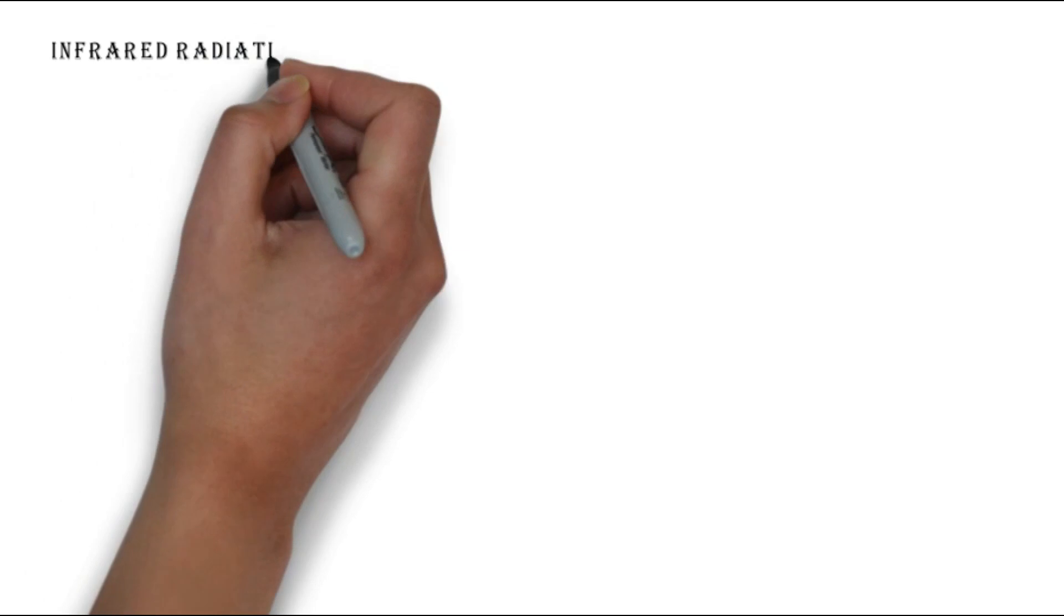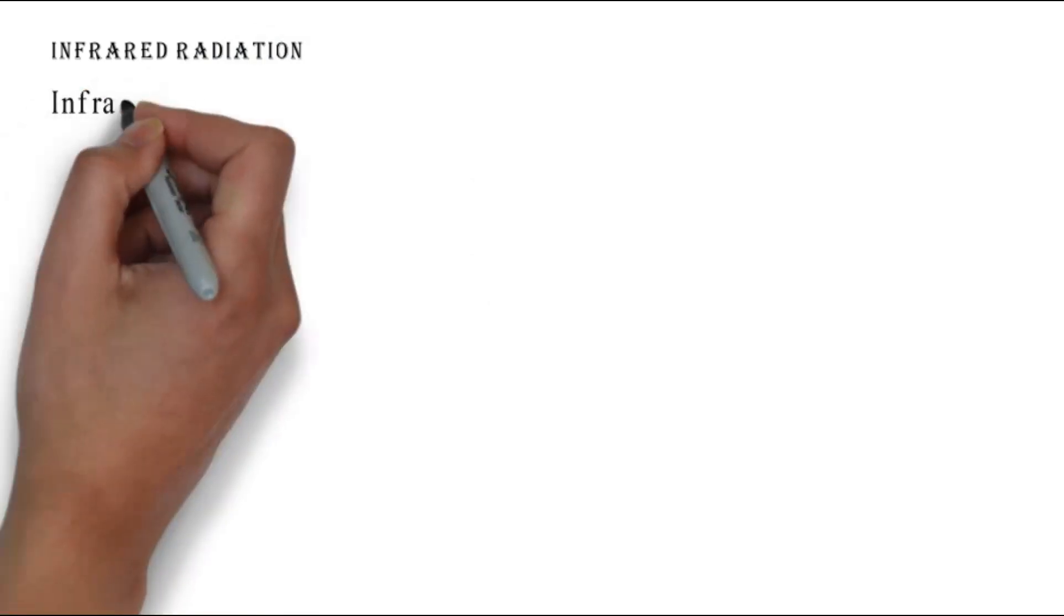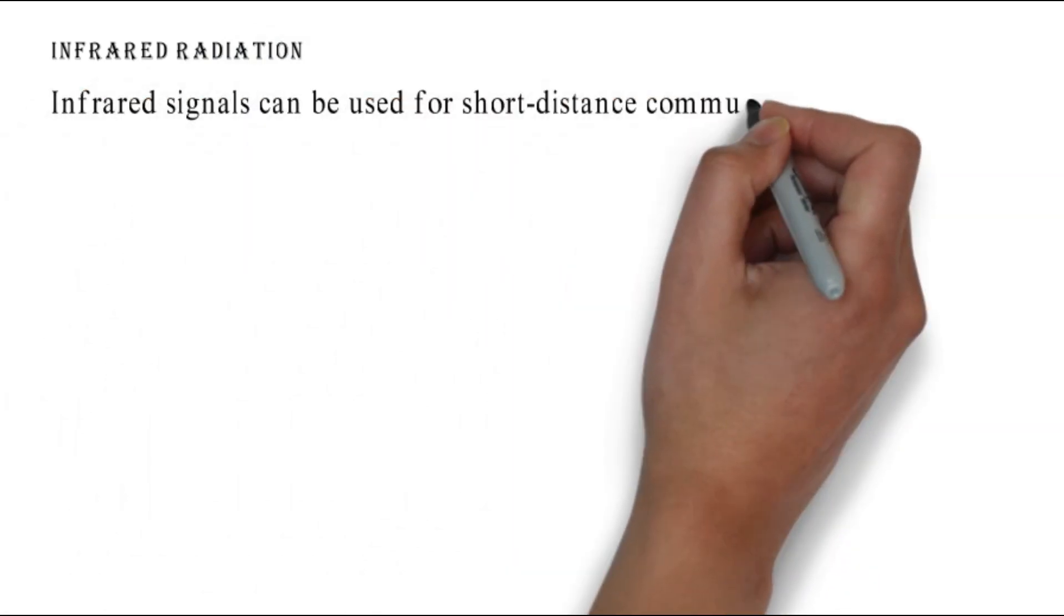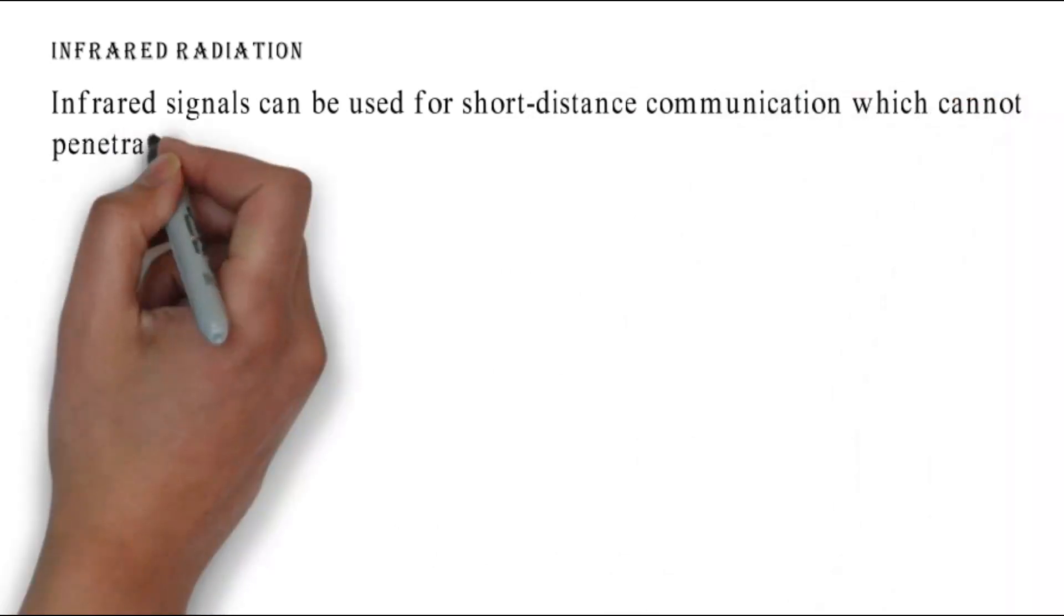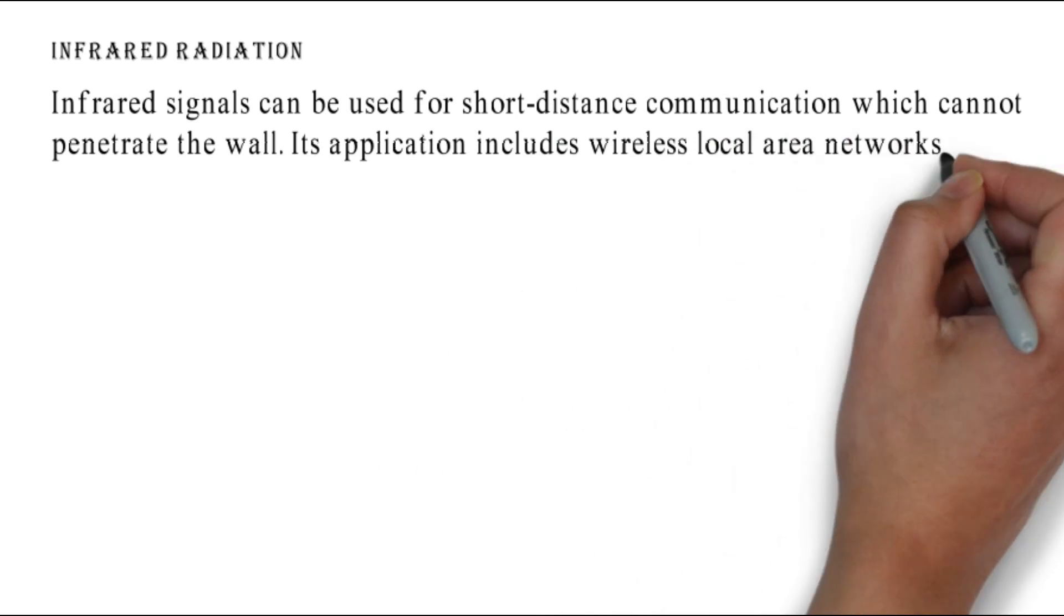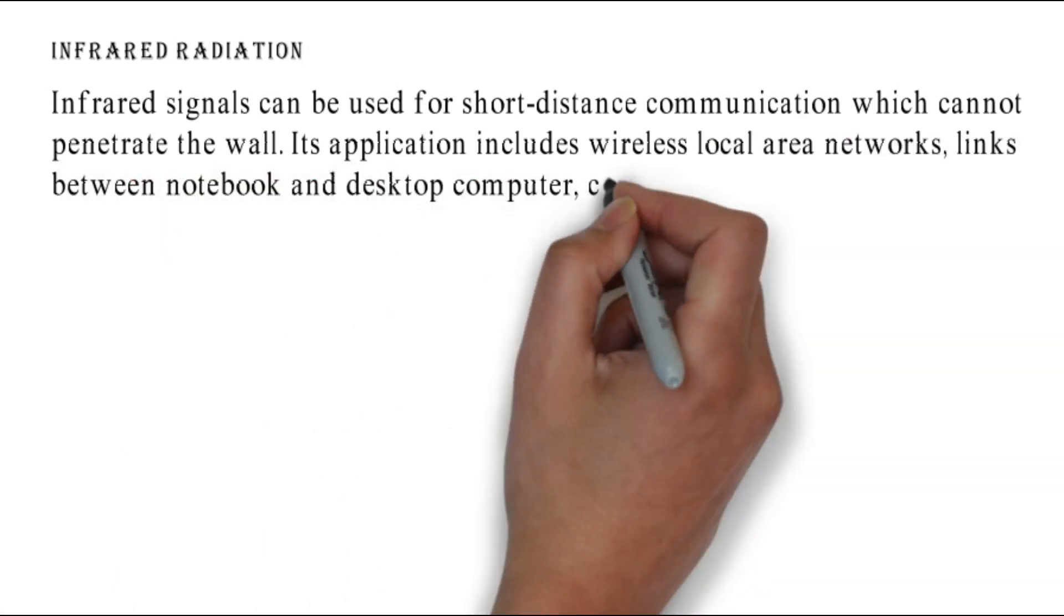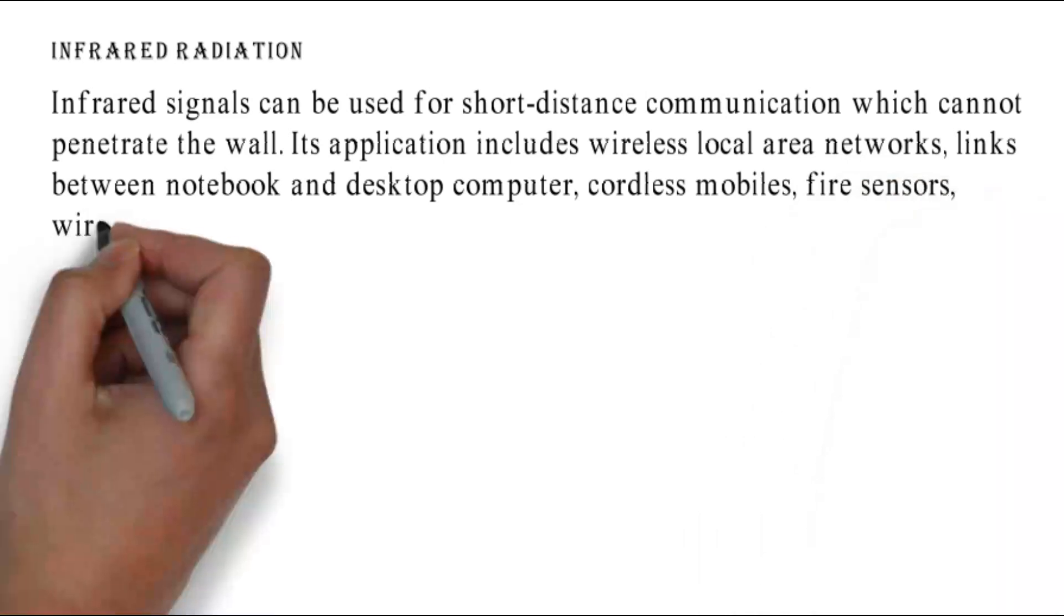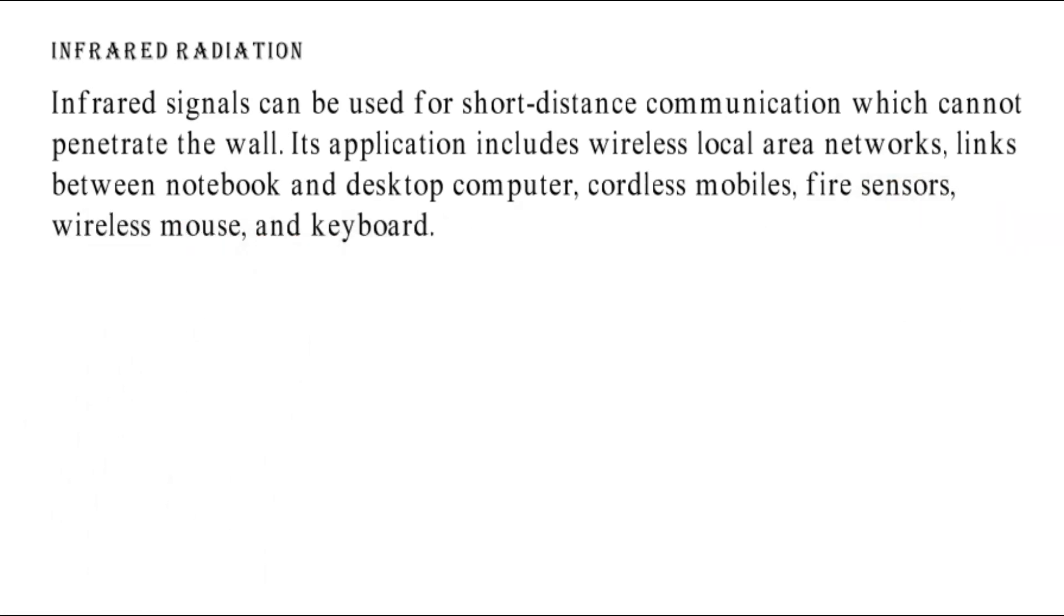Infrared radiation. Infrared signals can be used for short distance communication which cannot penetrate the wall. Its application includes wireless local area networks, links between notebook and desktop computer, cordless mobiles, fire sensors, wireless mouse and keyboard.